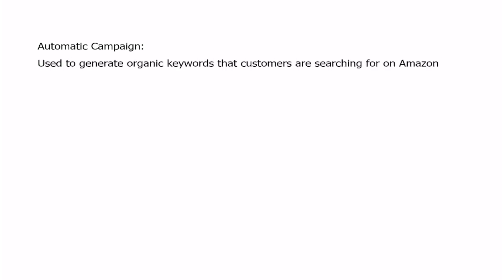Automatic campaigns are used to gather organic keywords that our customers are searching when they are shopping on Amazon. Every single time a customer clicks on your ad through a specific keyword that they typed into the Amazon search bar, you will see the keyword that they typed in if they clicked on your ad.